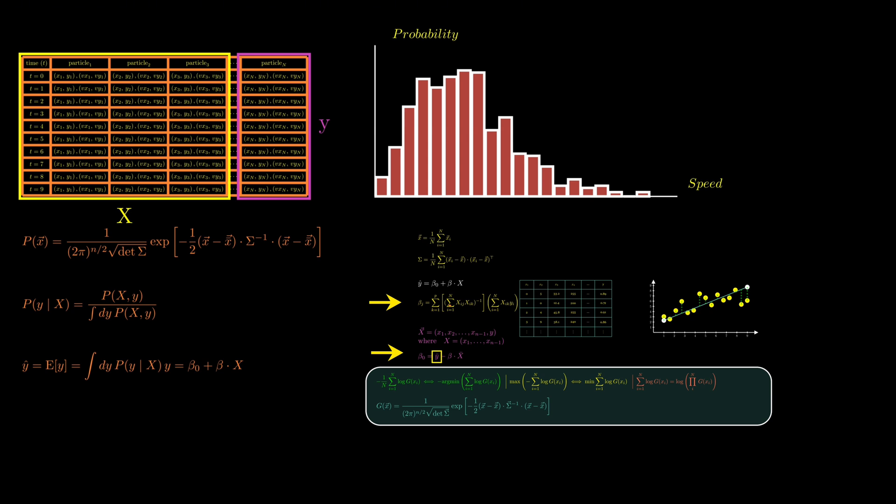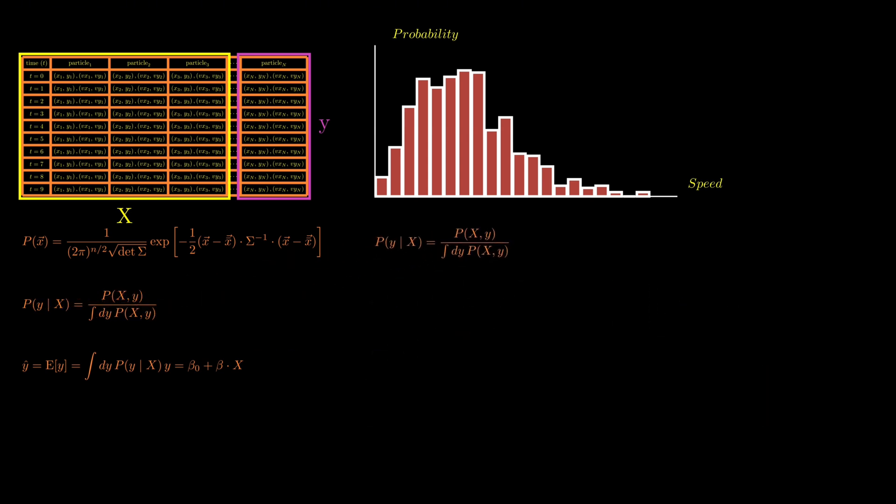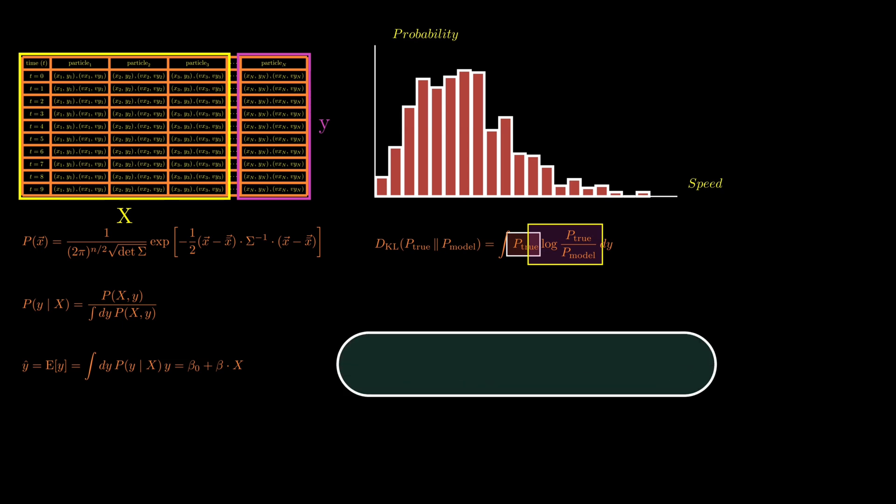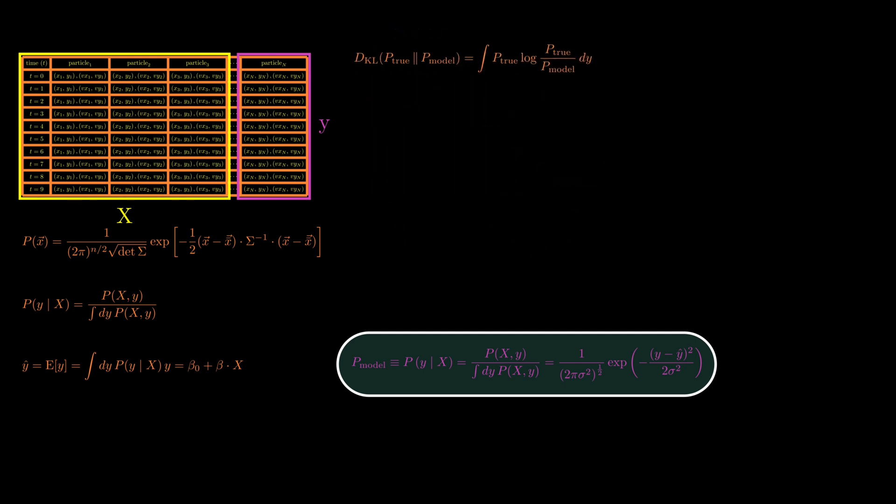Instead, we can directly apply the idea of relative entropy to the conditional distribution of Y given X. This allows us to measure how well our model for predicting Y matches the true but unknown conditional probability. The Kullback-Leibler divergence is defined as the integral of the true distribution times the log of the ratio between the true distribution and our model distribution. To model this conditional probability, we again start from the multivariate Gaussian and simplify. It turns out that the conditional distribution of Y given X is itself a one-dimensional Gaussian, a bell curve centered at Y-hat with a variance sigma-squared that comes from the last element of the covariance matrix.